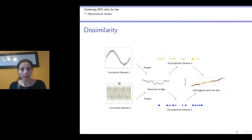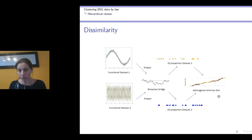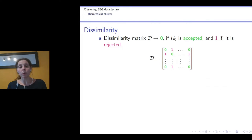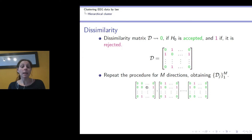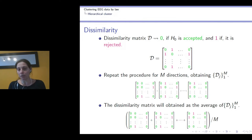We obtain two different univariate datasets from projecting the functional data, and compare their distributions using the Kolmogorov-Smirnov test. Once we have done this for all possible comparisons, we construct a dissimilarity matrix that is zero if we accept the null hypothesis — meaning both sets have the same distribution — and one if we reject it. Due to stability reasons we repeat this procedure for several random directions, obtaining m different dissimilarity matrices, which are then summarized by averaging to yield the final dissimilarity matrix for hierarchical clustering.